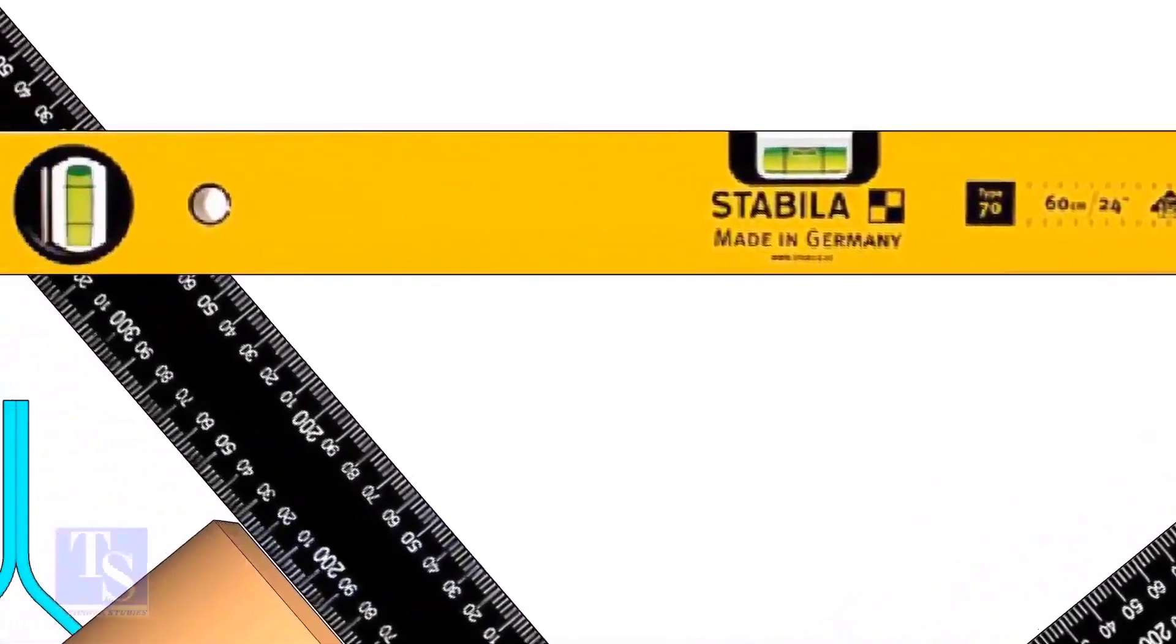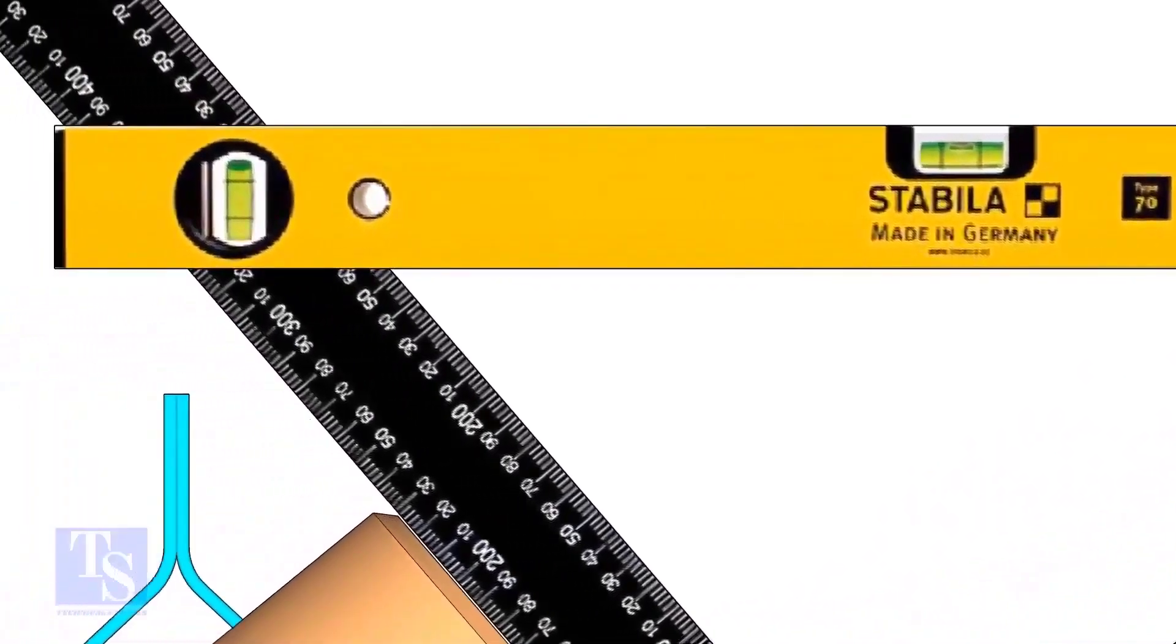Rotate the T, holding the right angle and the level bottle firmly, until the level bottle is in level.